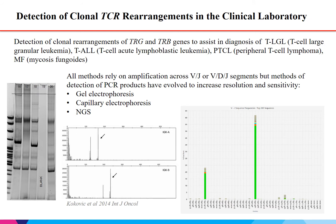The detection of clonal rearrangements of the TCR genes, in particular TRG and TRB, has been used to assist in the diagnosis of T-cell large granular leukemia, T-cell acute lymphoblastic leukemia, peripheral T-cell lymphoma, and mycosis fungoides. These methods of detection of rearrangements that occur during the normal ontogeny of T-cells rely on PCR amplification across the VJ or VDJ segments, followed by various methods of detection.